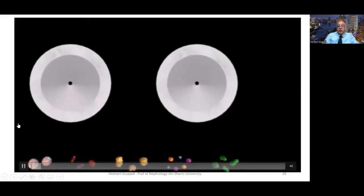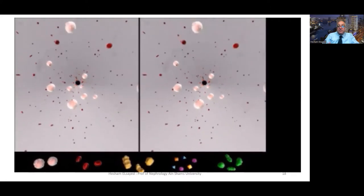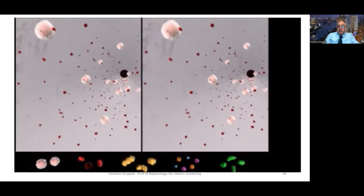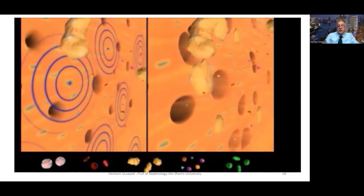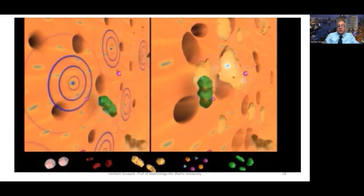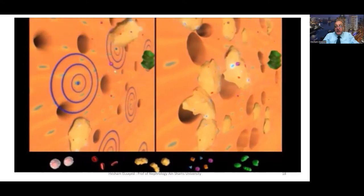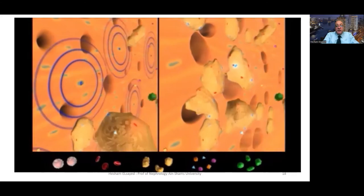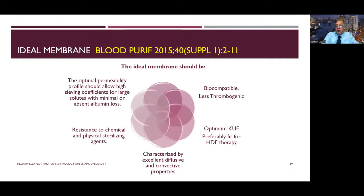Both modalities show improvement in biocompatibility — meaning the membrane is more inert, more hydrophilic, and more patient-friendly for the blood circulating during dialysis. Increasing porosity will increase uremic toxin removal. However, albumin loss should be limited to below 3 grams, unless there is a nutritional assessment for patients with higher albumin loss. The ideal membrane is biocompatible, offers optimum ultrafiltration, removes middle molecules efficiently, and has low thrombogenicity to decrease anticoagulation requirements.